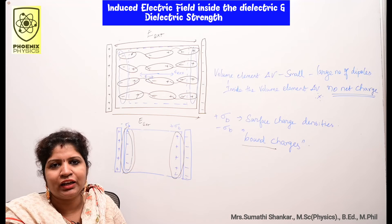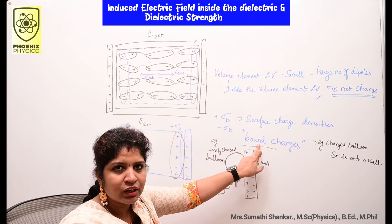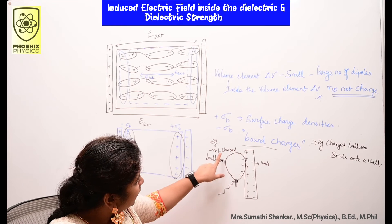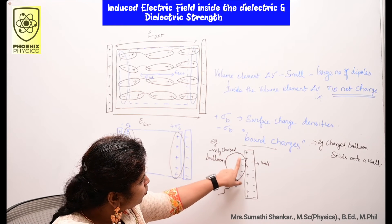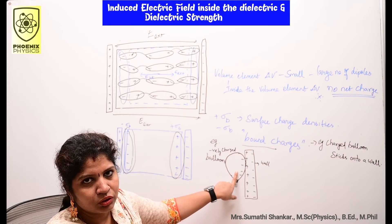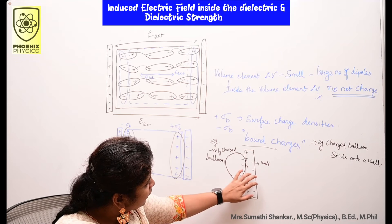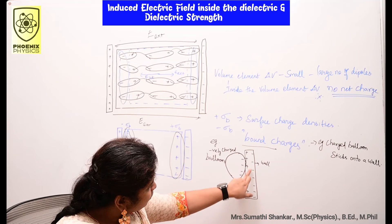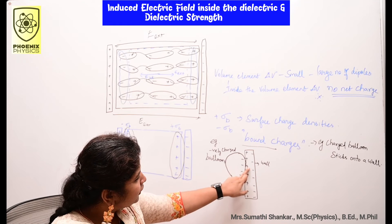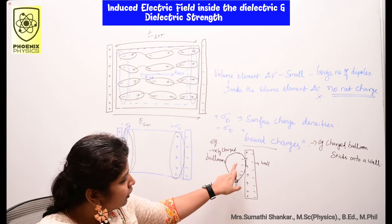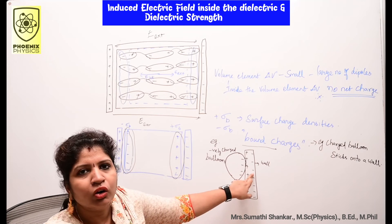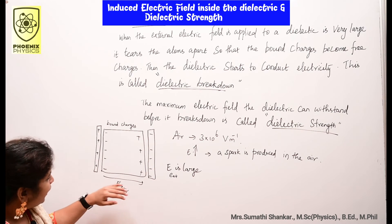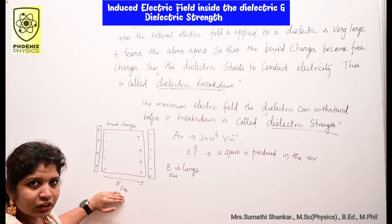These charges are called bound charges — they cannot move like free electrons. An example of bound charges is a charged balloon that sticks onto a wall. When you rub the balloon, negative charges are produced on one side. When brought near a wall, the wall is polarized — positive charges are induced — so the balloon is attracted and sticks.